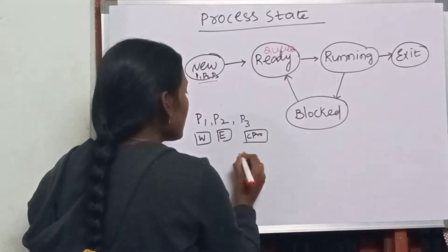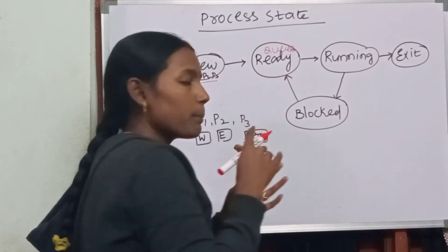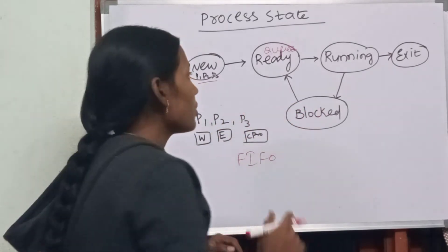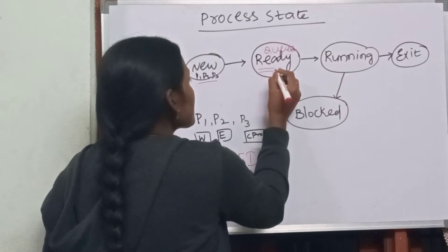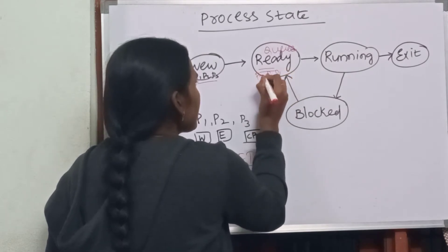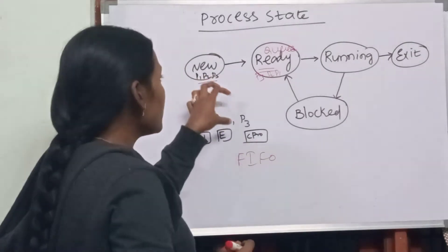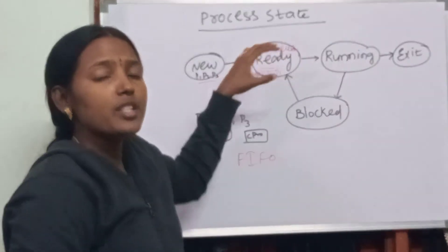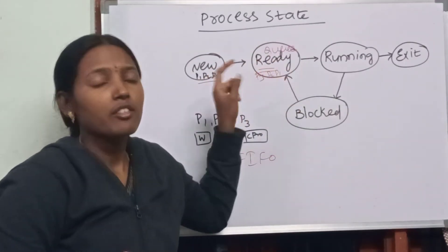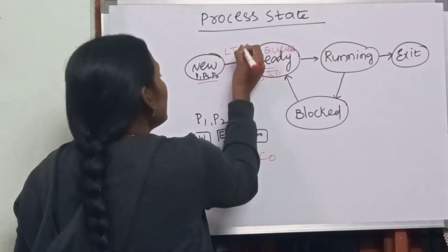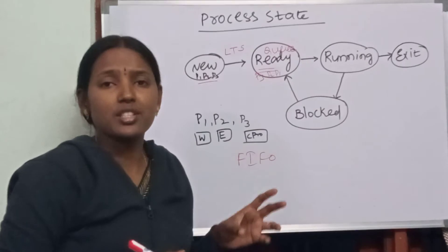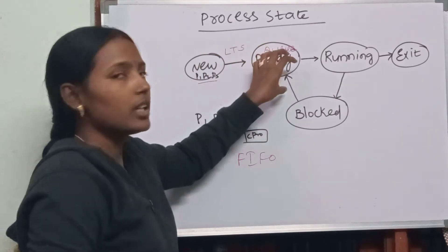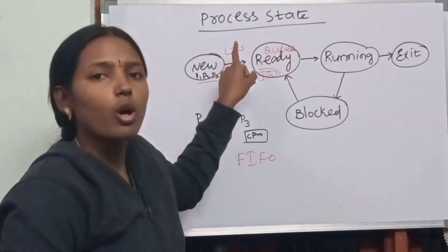The queue follows the first-in, first-out principle. Whichever process comes to the queue first will go out first. So in this queue, first P1 is there, next P2, next P3. Processes are moving from new state to ready state. Who takes these processes from new state to ready state? We have the long-term scheduler, or LTS. The long-term scheduler takes processes from the new state and places them in the ready queue.